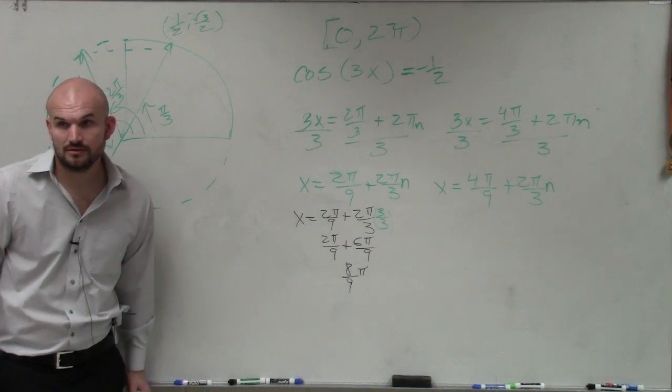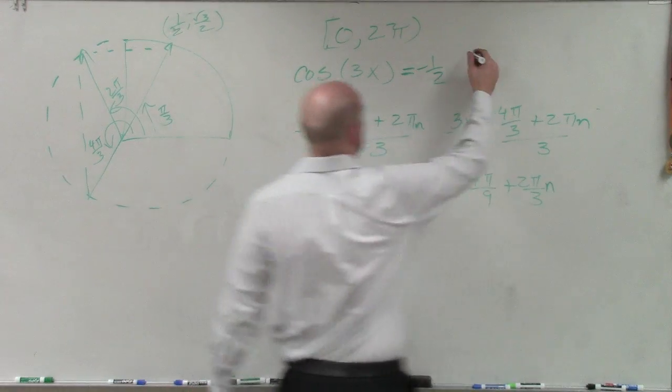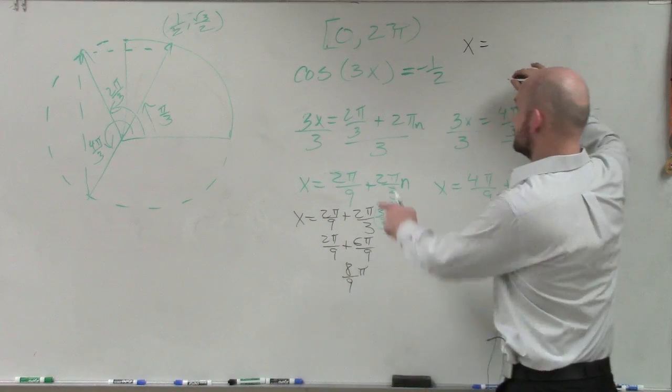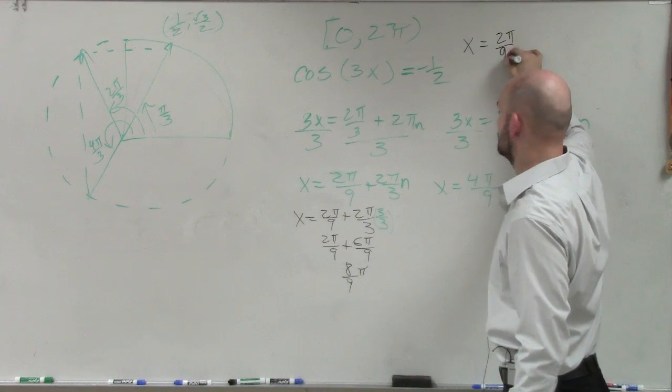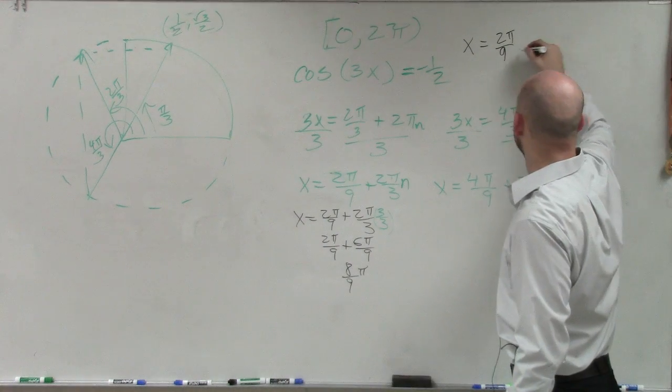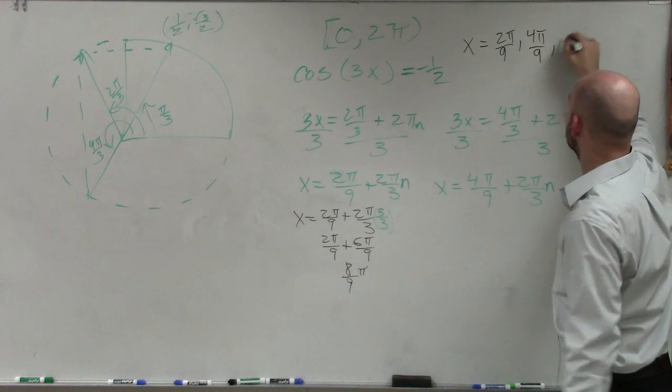Is that still a solution? Is 8π over 9 still a solution? Yeah. So guess what? So x equals 2π over 9, 4π over 9, 8π over 9.